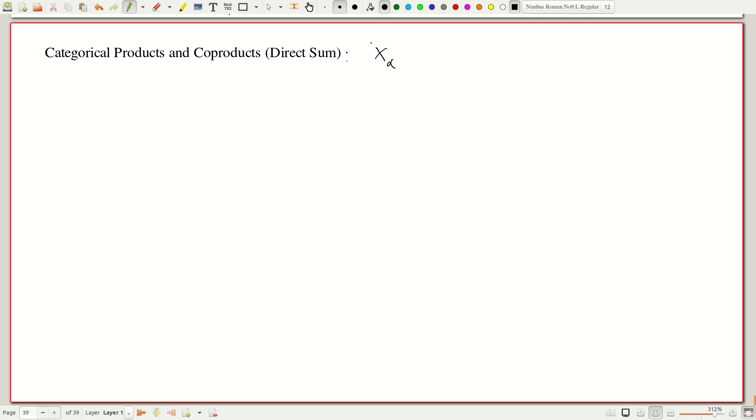In both cases what we have is x_alpha. Both in the case of products and sums, we have the following: x_alpha, alpha in A, objects in some category.